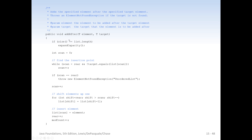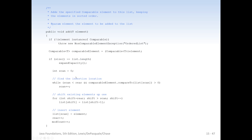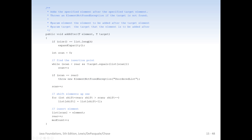Here is the add after function. We have an element T and a target T. We check capacity to see if it needs to be increased, then search through to find the target. This is not trying to maintain order — we're searching for a particular element to add after. If we don't find it, we throw an exception. We shift all elements up one, then insert the element in the new location. We find the particular element at scan, increment scan because we're inserting after, do the insert, increment the rear because we shifted everything up one, and then increment the mod count.